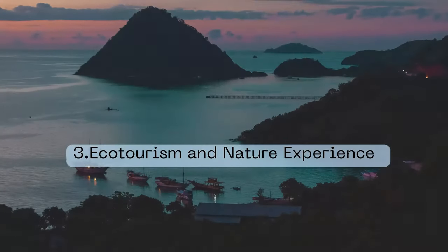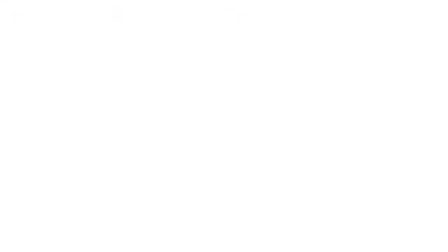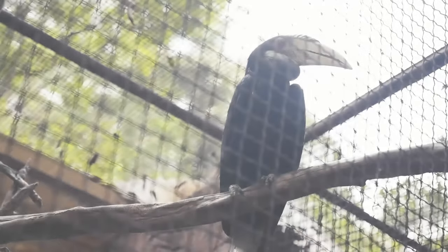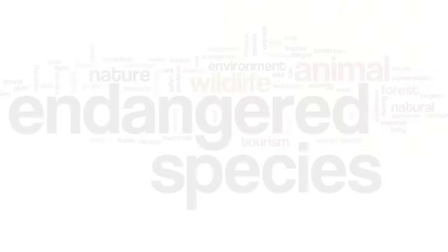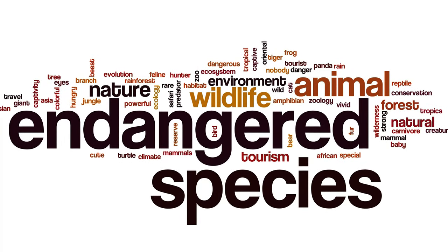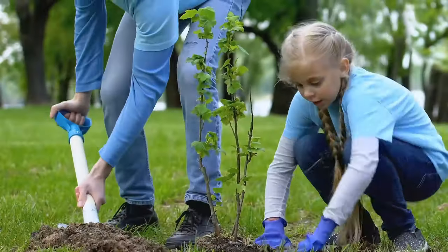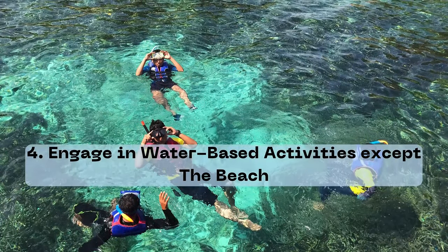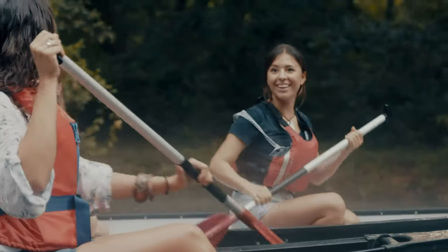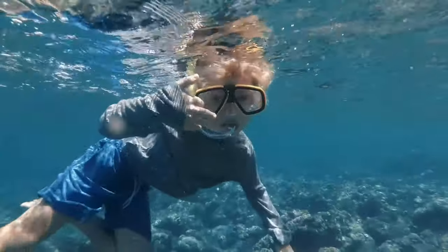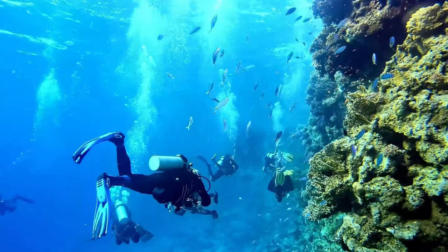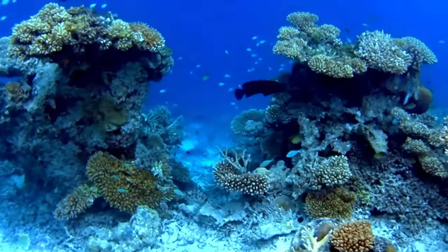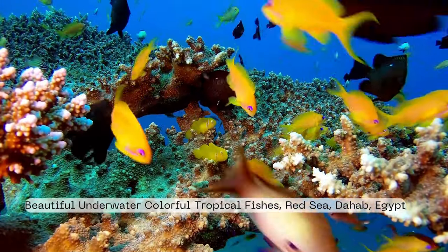3. Ecotourism and Nature Experience — offering wildlife safaris or guided tours in national parks and wildlife sanctuaries for observing native animals in their natural habitats. Developing bird-watching tourism in areas known for diverse bird species. Advocating against hunting contests for endangered animals and raising awareness about environmental preservation. 4. Water-based activities — kayaking or canoeing on rivers, lakes, or mangrove forests. Planning snorkeling and diving trips to explore underwater ecosystems like coral reefs, maintaining conservation efforts that require responsibility from all parties including visitors.